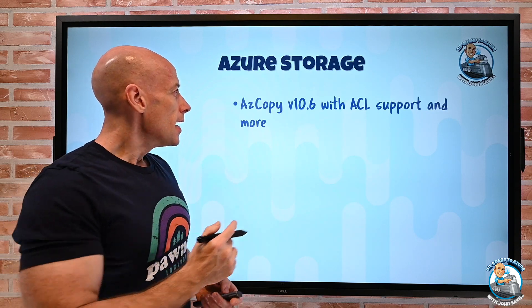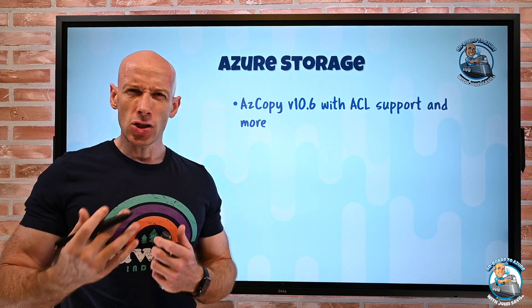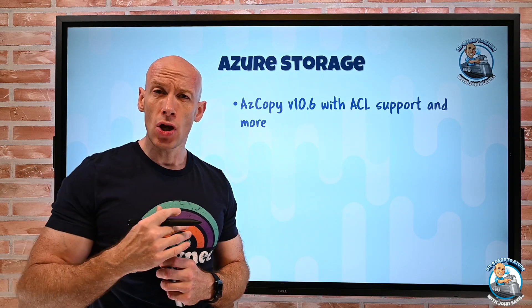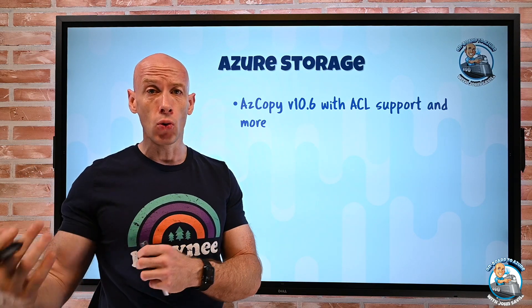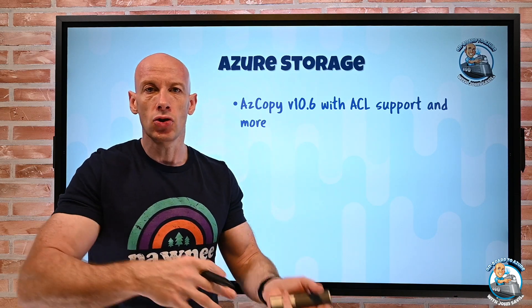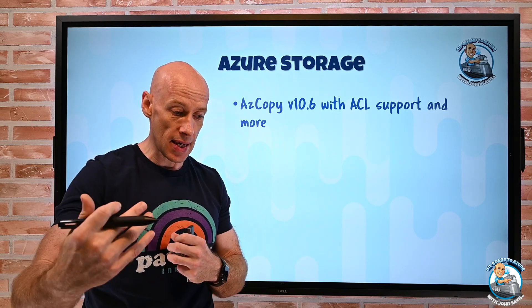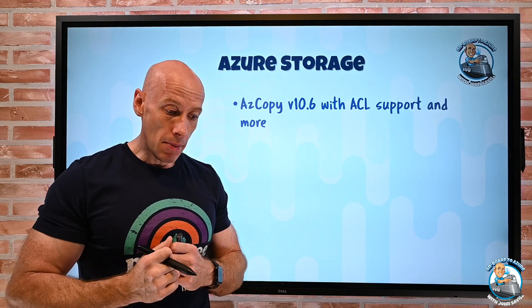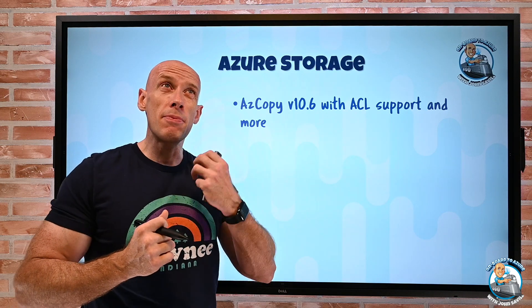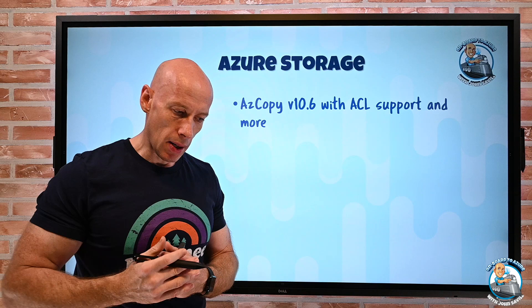On the storage side, azcopy 10.6. This now has a bunch of new capabilities. It can preserve ACLs for services that support it. So if I was copying maybe from a Windows file share to Azure files, it can keep those. I can do a persist SMB permissions. I can also keep things like write time, update time, when I'm doing those same types of copies.